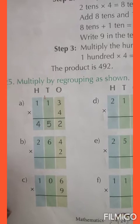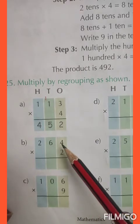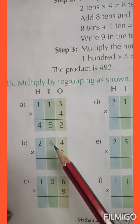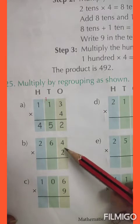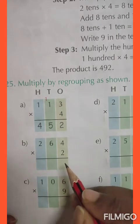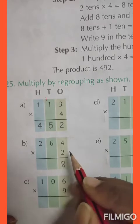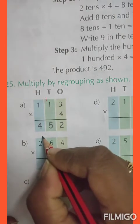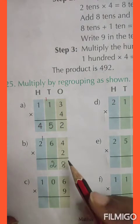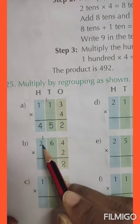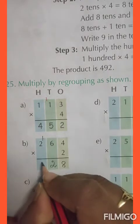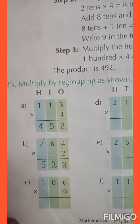Same way we will do question number B: 264 by 2. So, we have to multiply 264 by 2. 2 fours are 8. 2 sixes are 12, we write 2 and then 1 will be carried over. 2 twos are 4 plus 1 is 5. And the answer is 528.